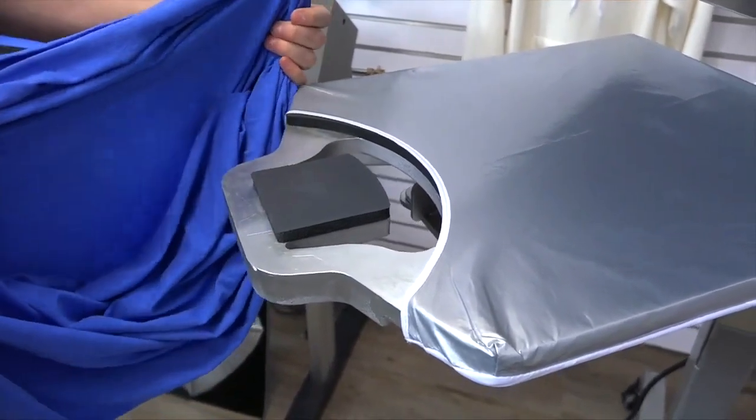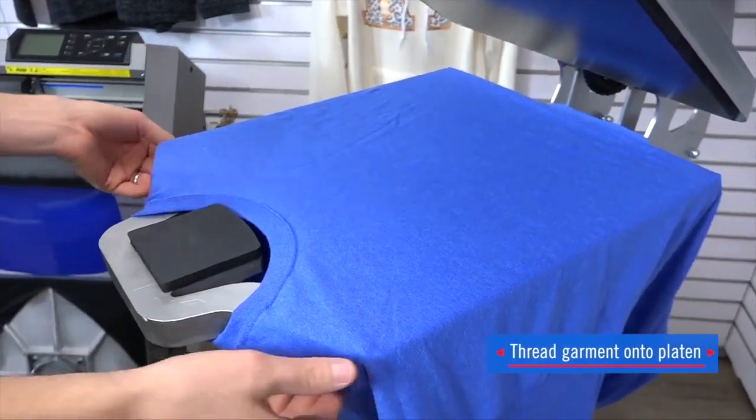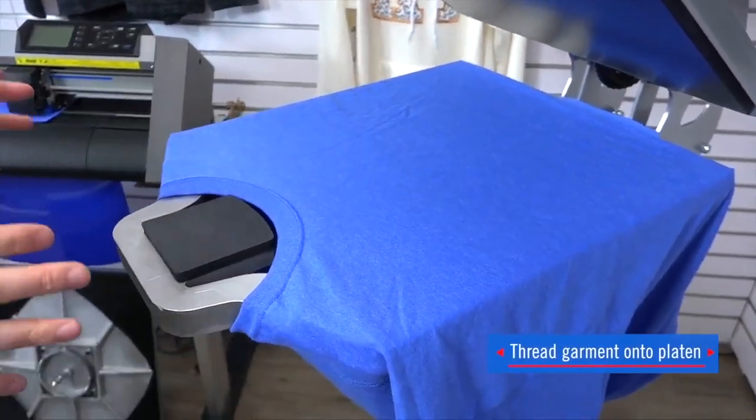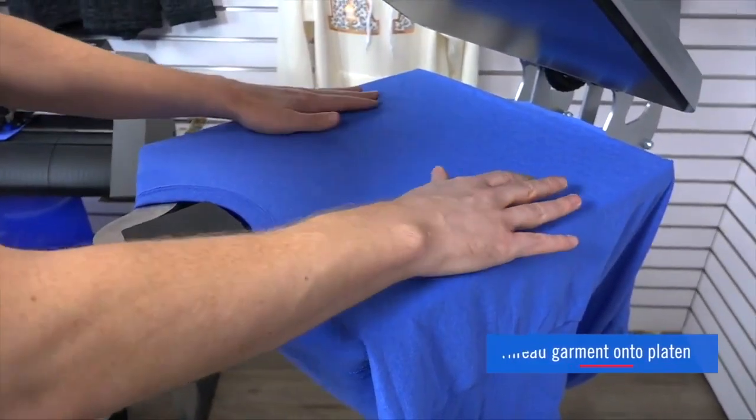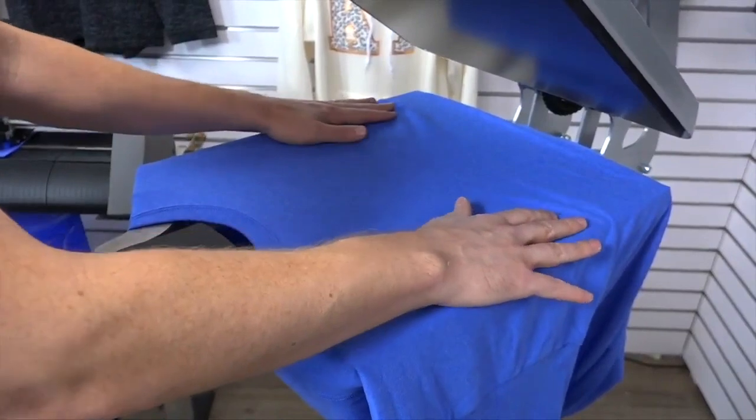So I'll split my garment open and I'm going to thread it onto the press. I've chosen to use a triple XL t-shirt here to show you how this works because one of the biggest benefits of the platen is that it helps you to load the shirt straight.